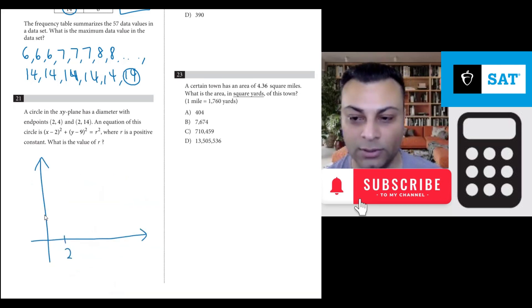Here's x=2. Let's say here's y=4. Not drawn to scale. Here's y=14. So here's the point (2,4) and here's (2,14). The circle has these as diameter endpoints.